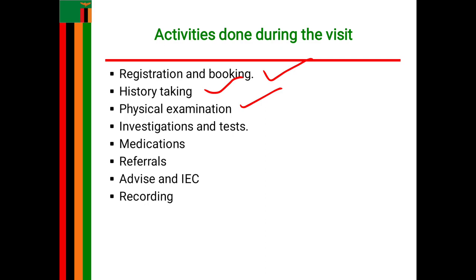From general examination, you now proceed to a full physical examination done from head to toe. In terms of the head, you look at the hair of the woman, checking for signs of poor nutrition — whether the hair is brown or brittle — which may indicate chronic TB or HIV.